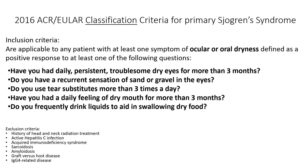In 2016, the American College of Rheumatology and the European League Against Rheumatism came out with classification criteria for primary Sjögren's syndrome. Classification criteria are very different from diagnostic criteria — they are used to very clearly identify people with Sjögren's syndrome for use in trials and studies, and are not necessarily supposed to be used for diagnosis, because you may not need all of these perfectly to have a diagnosis.